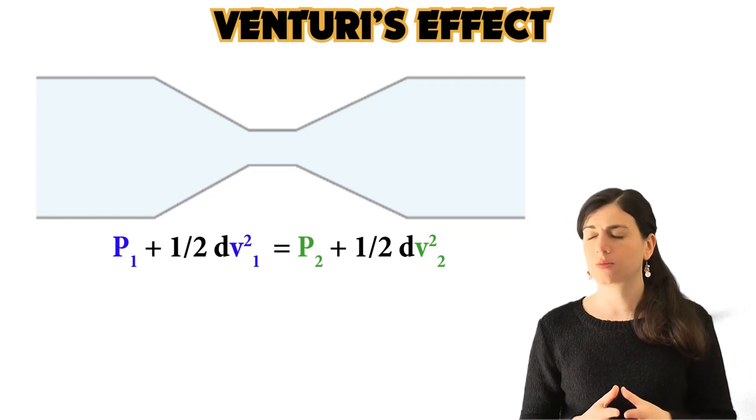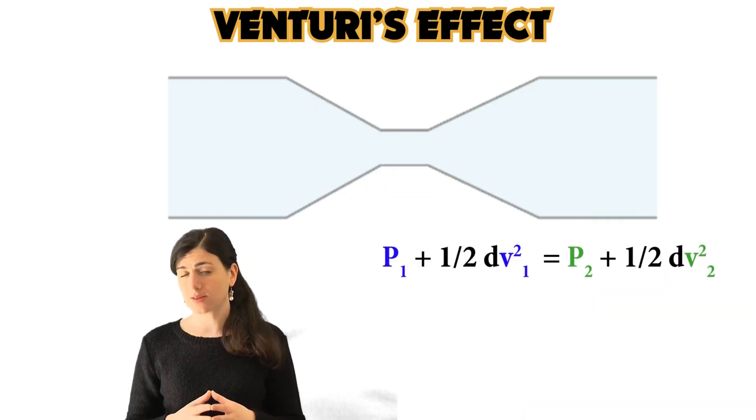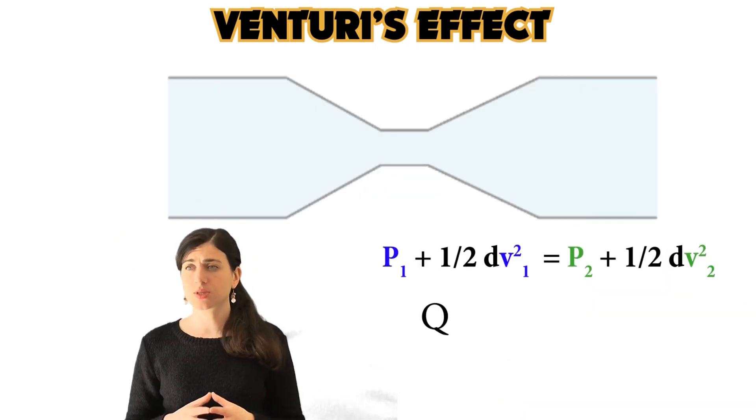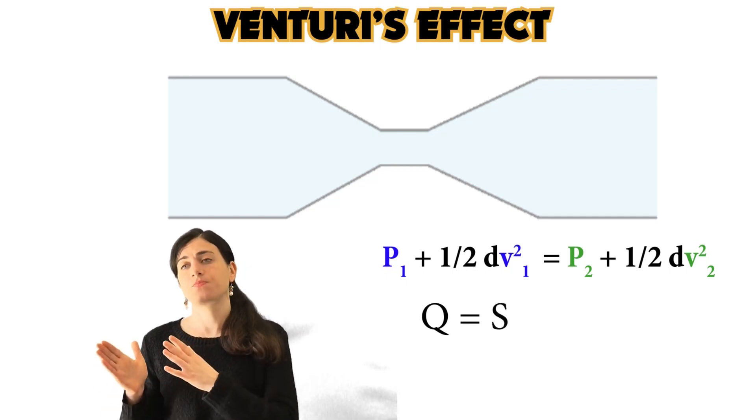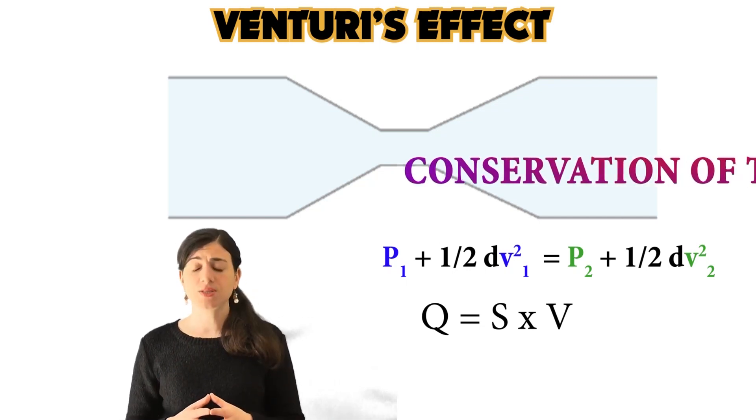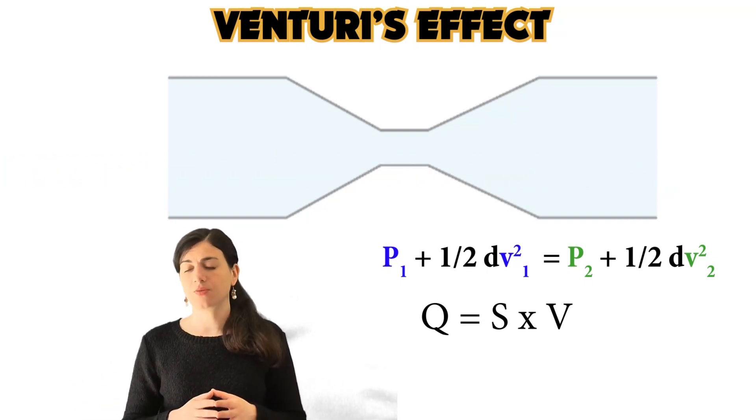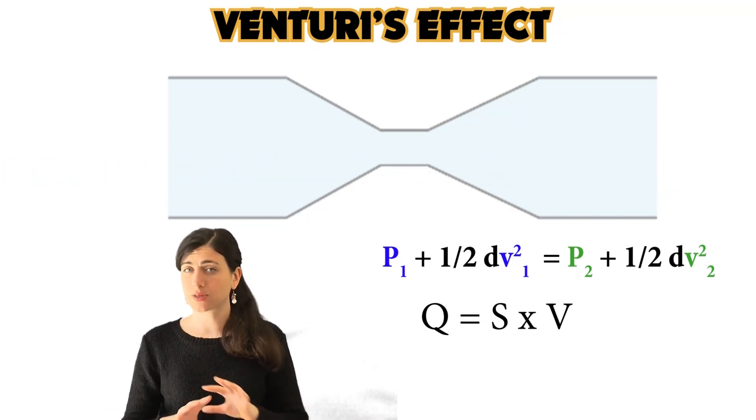Let's now introduce for a while a new concept, which is the flow rate. Flow rate is actually very simple, because it equals section times the speed of the fluid. Now, there is a principle in the physics of fluids, which is the conservation of the flow rate. This means that the flow rate should be the same in the pipe.